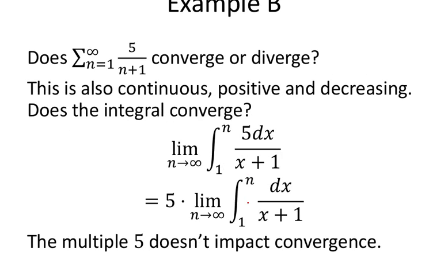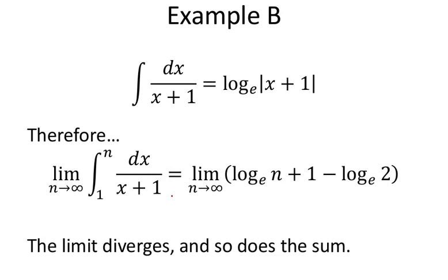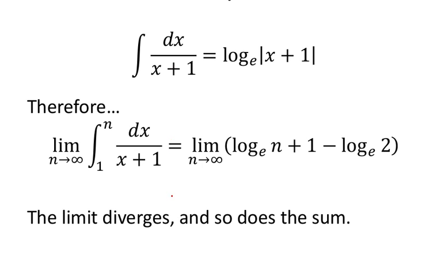Another example, does 5 over n plus 1 converge or diverge? It's continuous, it's positive, it's decreasing. So, take a look at the integral. One thing we could do right away is we can take the 5 outside the integral because we're just testing if this converges or not. We don't care by how much it does or doesn't. It's a binary case. We don't really even need this 5. We can discard that and just solve the improper integral without it because we're not looking for an exact answer. We're just looking for a true or false if this converges or not. And so, it simplified the integral slightly, taking out that constant multiple.